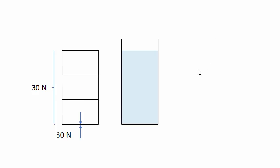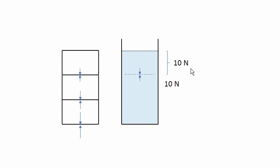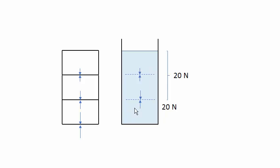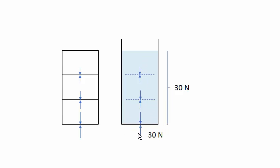Now let's take a look at the water. This block of water weighs 10 newtons, with a counterbalancing force of 10 newtons. For this block of water: 20 newtons, counterbalanced by 20 newtons. And finally at the bottom of the container, 30 newtons of water exerts a downward force of 30 newtons, and the bottom of the container exerts a counterbalancing force of 30 newtons.